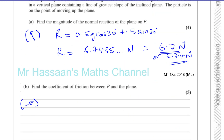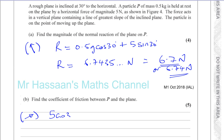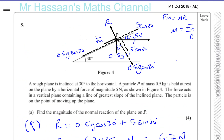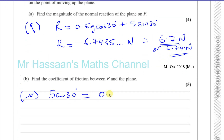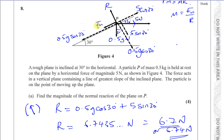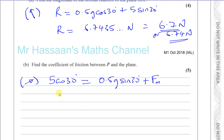F_max equals 5·cos30 minus 0.5g·sin30. That's 5 × (√3/2) minus 0.5 × 9.8 × 0.5, since sin30 = 0.5, giving 0.25g. Calculating: 5·cos30 minus 0.5 × 9.8 × sin30 gives us 1.8801.